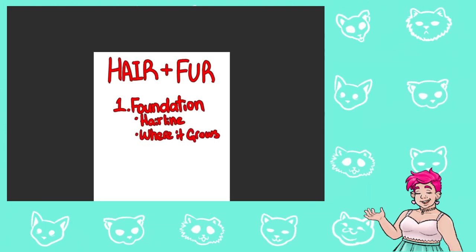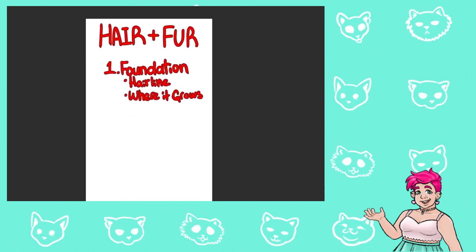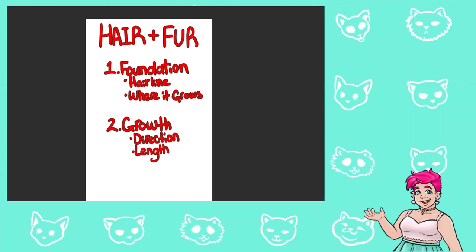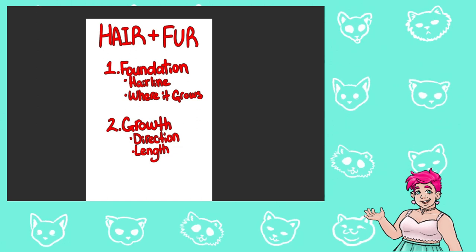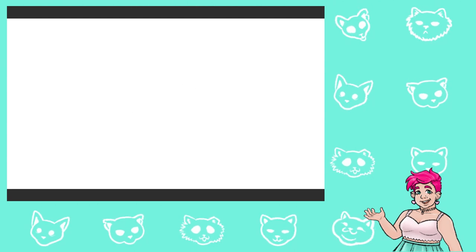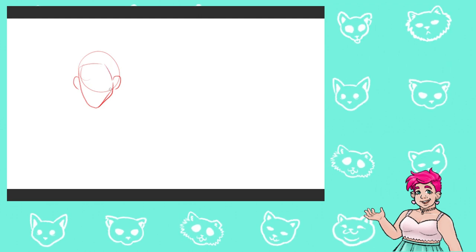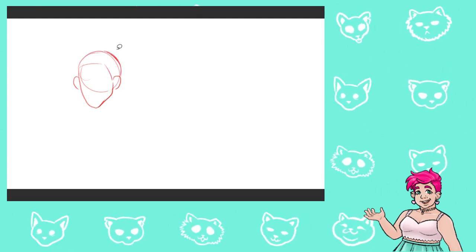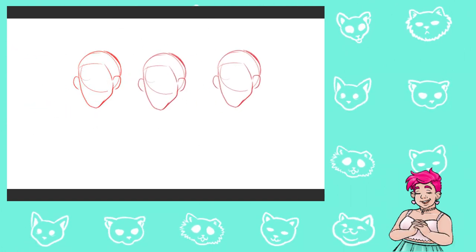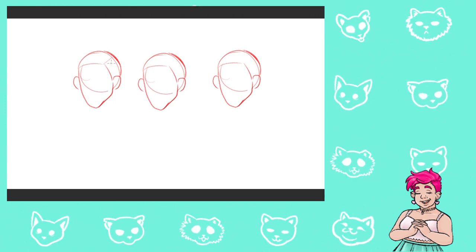Moving on to part two: how to draw hair and fur at different stages of growth. This includes how the way the hair grows affects the direction it lays, the way it layers, and obviously the way it changes in length. This will be especially important if you want to draw a character over a long period of time — like maybe an adventurer who doesn't get to have a haircut very often, or possibly if you want to show a character in different stages and ages of their life, whether through a flashback or following a character throughout their life.